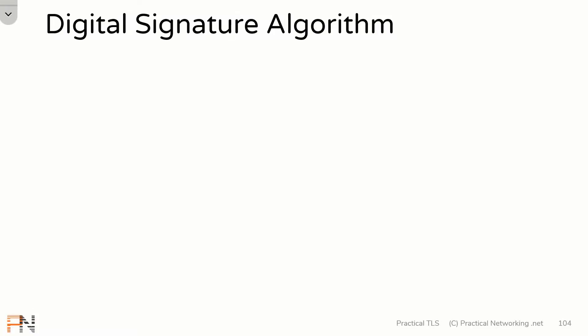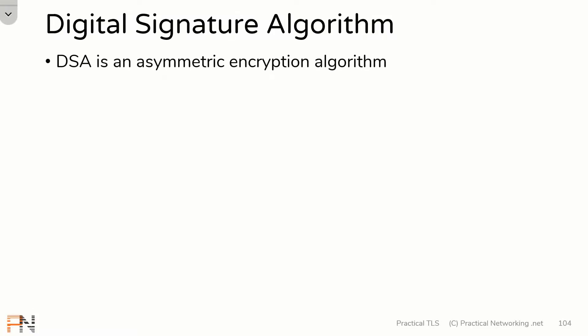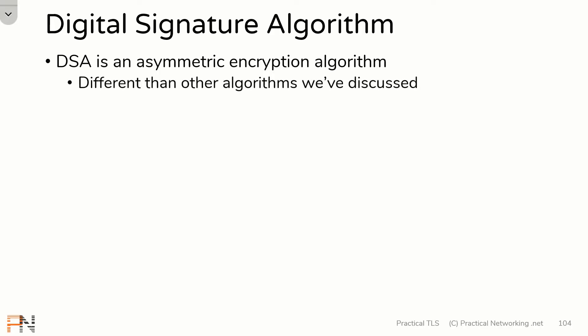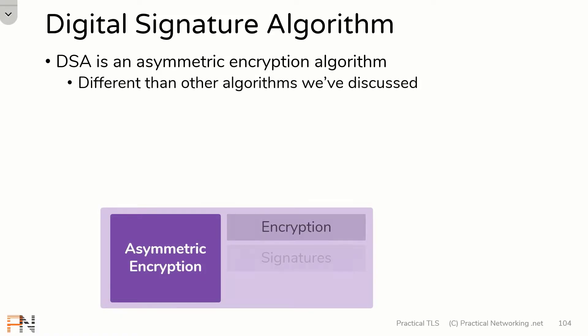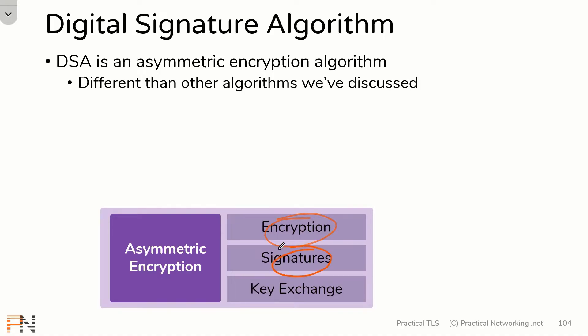The digital signature algorithm is an asymmetric encryption algorithm, but it's different from the other asymmetric encryption algorithms we discussed. Recall that asymmetric encryption can be used for three things: encryption, signatures, and key exchange.